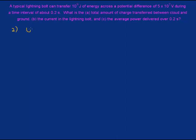We know that the potential energy is equal to the charge times the voltage. And we're given the energy up there and we have the voltage right down next to it. So if we solve that for charge, charge is going to be potential energy over voltage. And putting in the numbers we have 10 to the 9 joules and 5 times 10 to the 7 volts. That's going to give us a charge of 20 coulombs.